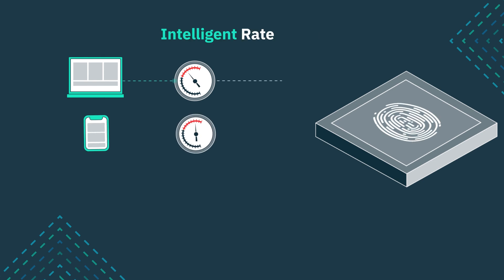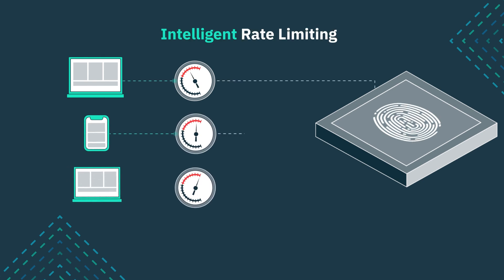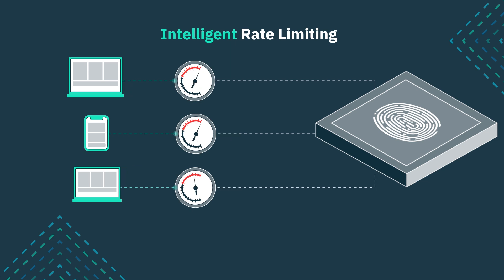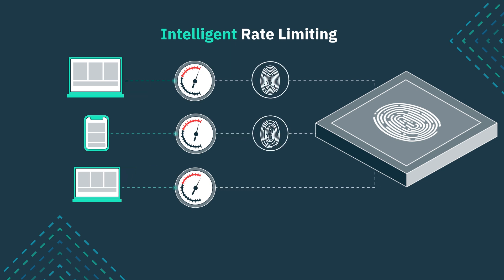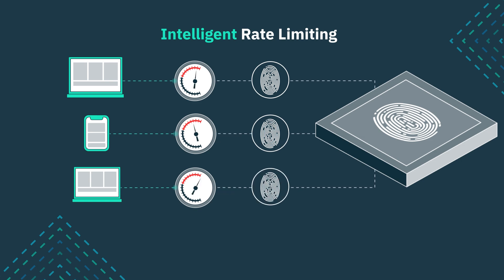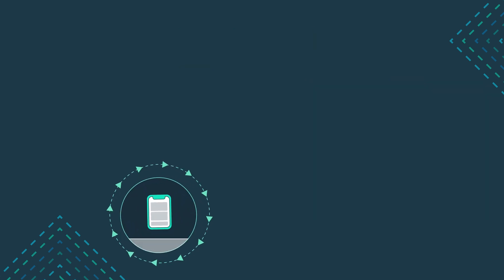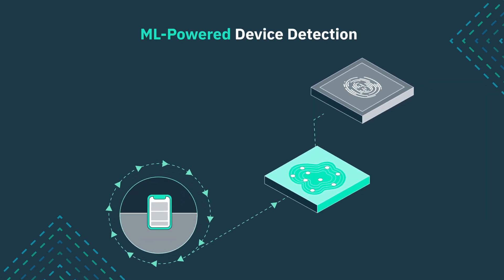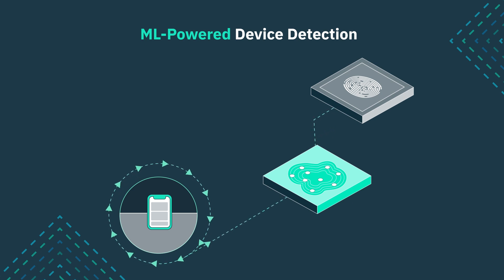First, intelligent rate limiting. Traditional network rate limiting takes an all-or-nothing approach, which can harm legitimate users when trying to block bots. Stitch's rate limiting is smarter, using device fingerprinting to precisely control traffic and adapt in real-time, ensuring a smoother experience for genuine users. The next new capability is a supervised machine learning model for device detection — instead of relying only on publicly catalogued device information, Stitch can interrogate and assess the risk of any new, unknown device type, handling day-zero threats and reducing the number of blocked or challenged logins.